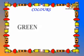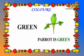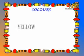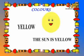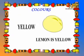Green. Leaf is of green color. Green. Parrot is of green color. Yellow. Sun is of yellow color. Yellow.